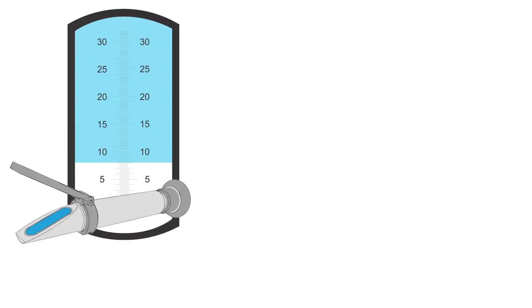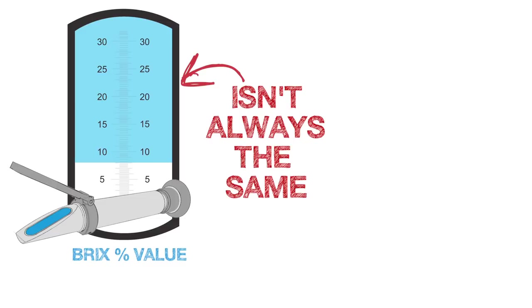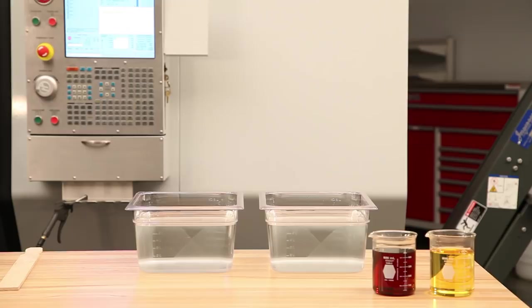The reading the refractometer displays is a BRICS percentage value. This value isn't always the same as the coolant's actual concentration. Here, we're preparing two test batches of coolant.